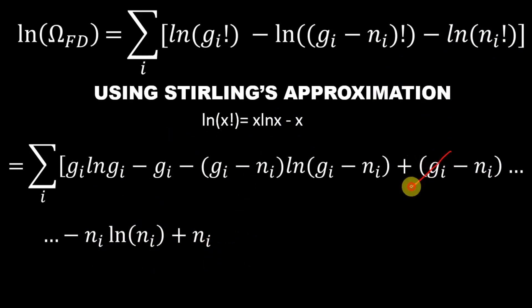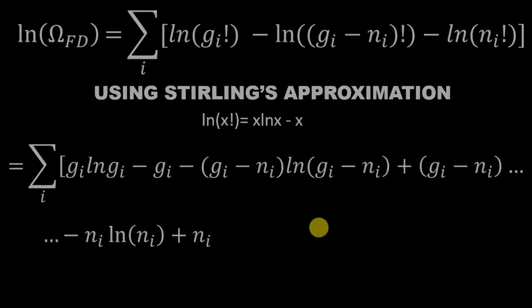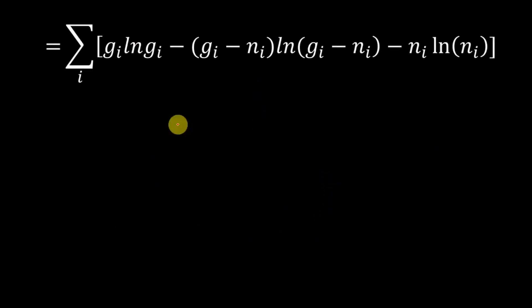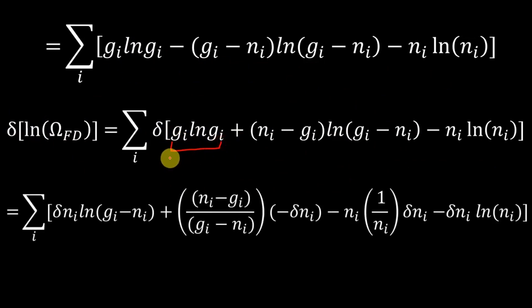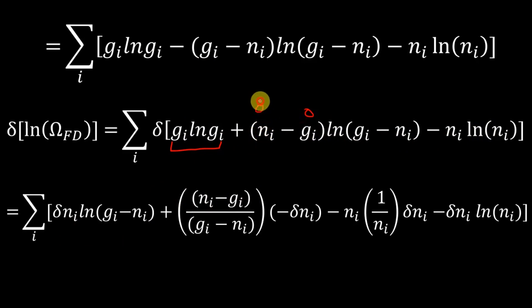After simplification we have the remaining terms. Now we take the derivative of ln(Omega_FD). Since G_i is not subject to variation, its derivative is zero, so we only need to differentiate the two remaining terms involving N_i, with derivative dN_i.